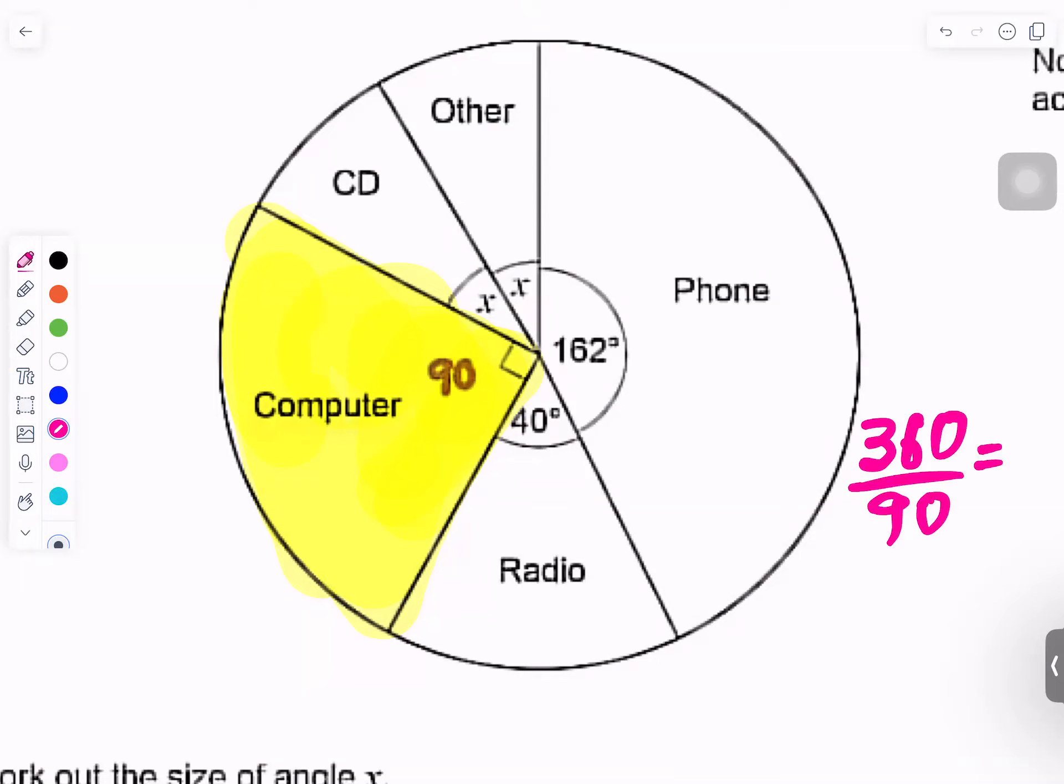Use your calculator. 36 divided by 9. Four. Oh, so that means you can divide this into four equal parts.